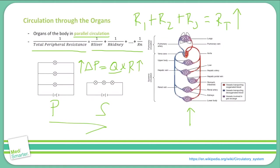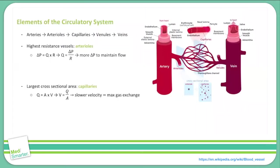So that's one of the advantages of having the organs arranged in a parallel circulation. Now that we understand the structure of the circulatory system, let's discuss some of its specific elements.